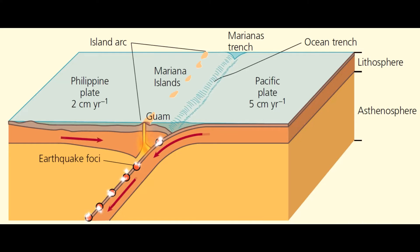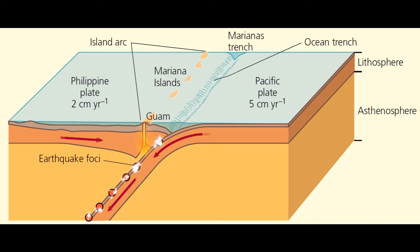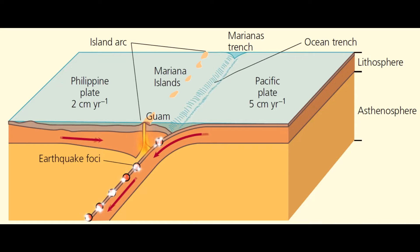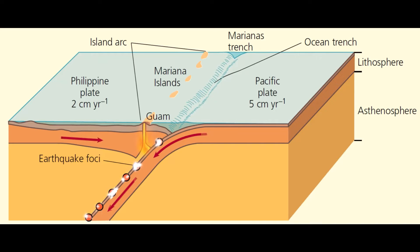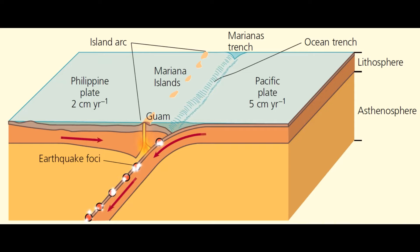As the oceanic plate descends, increased stresses may trigger earthquakes. Shallow earthquakes occur where the crust is stretched as it dips beneath the surface, and deeper earthquakes occur due to increased friction and pressure as the plate subducts.